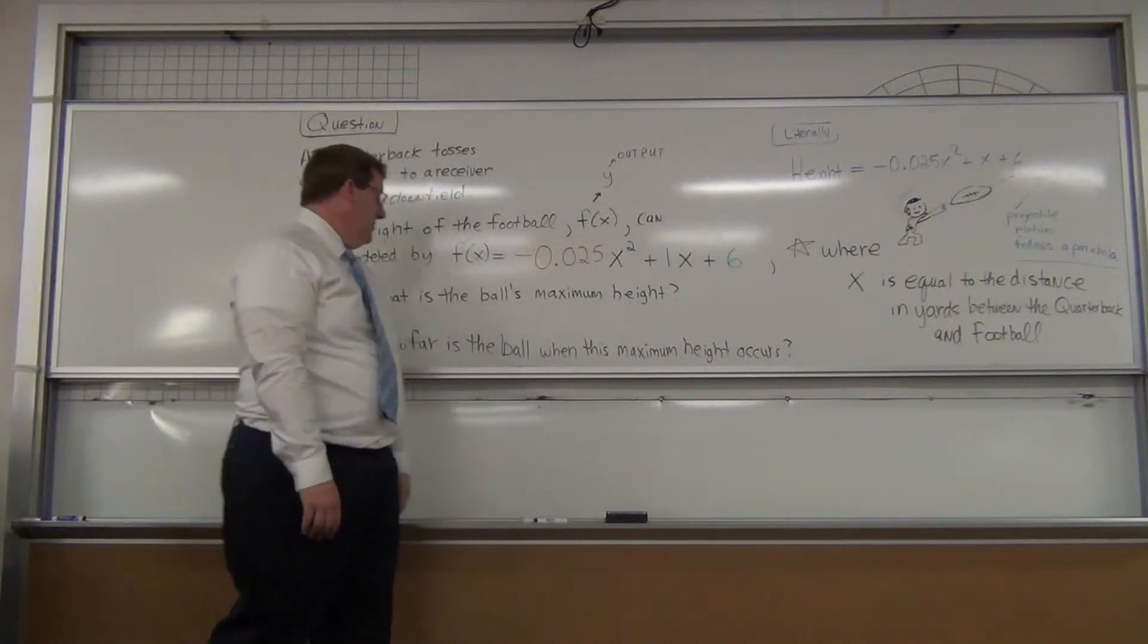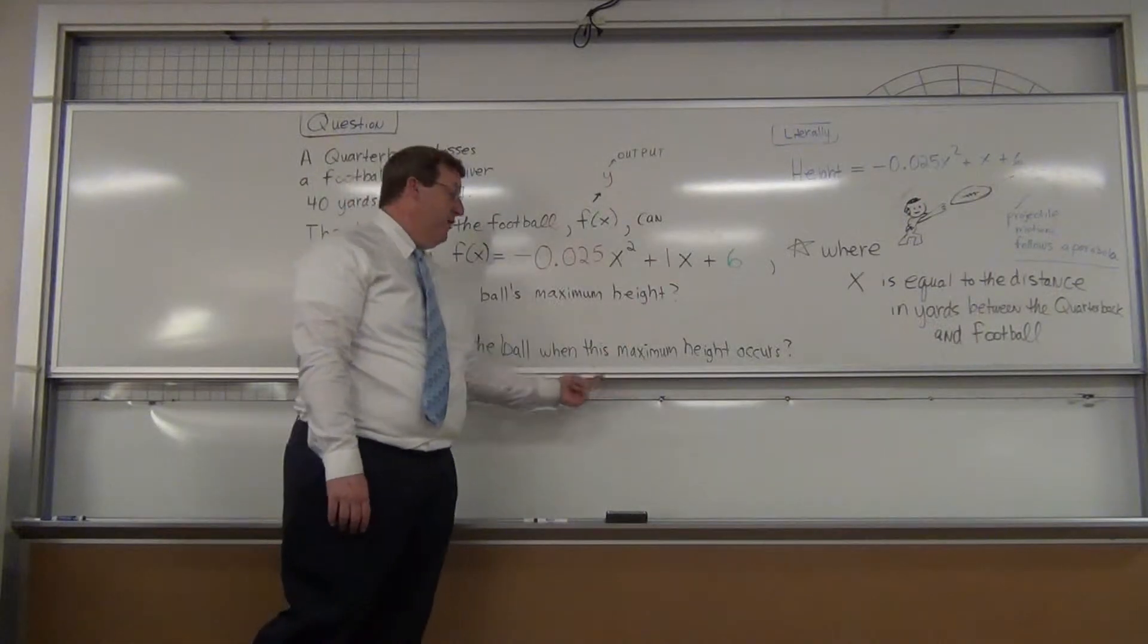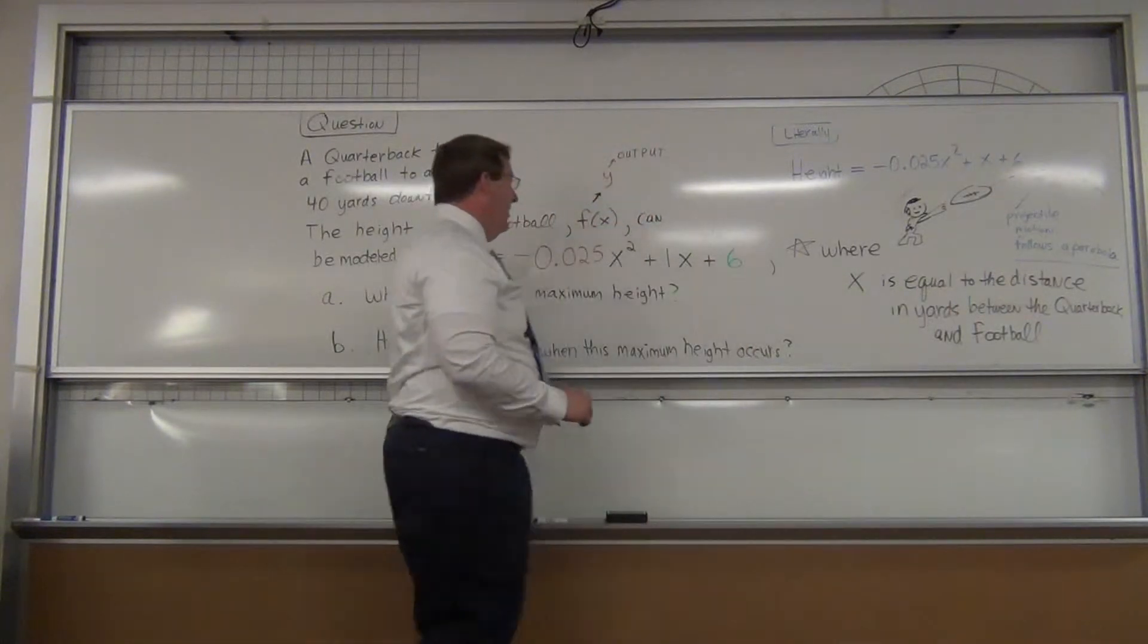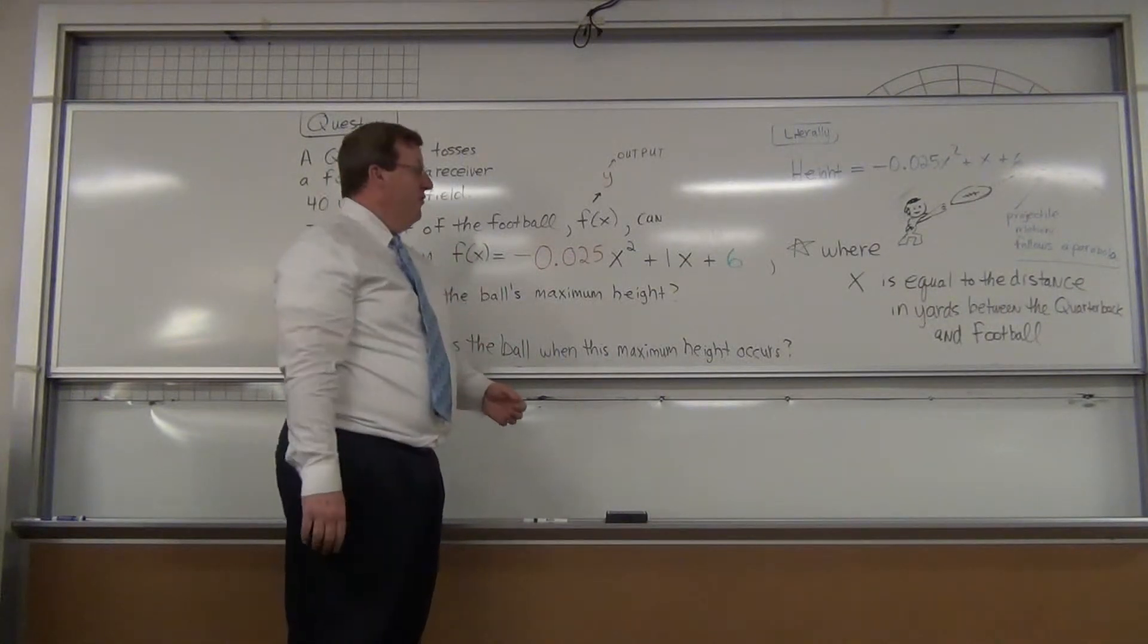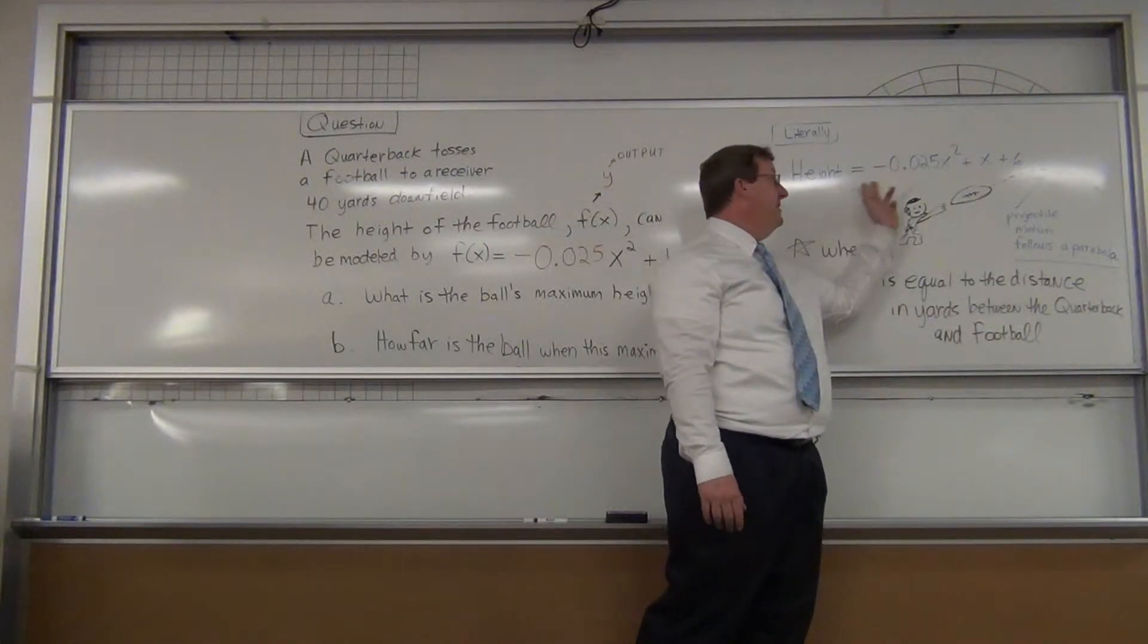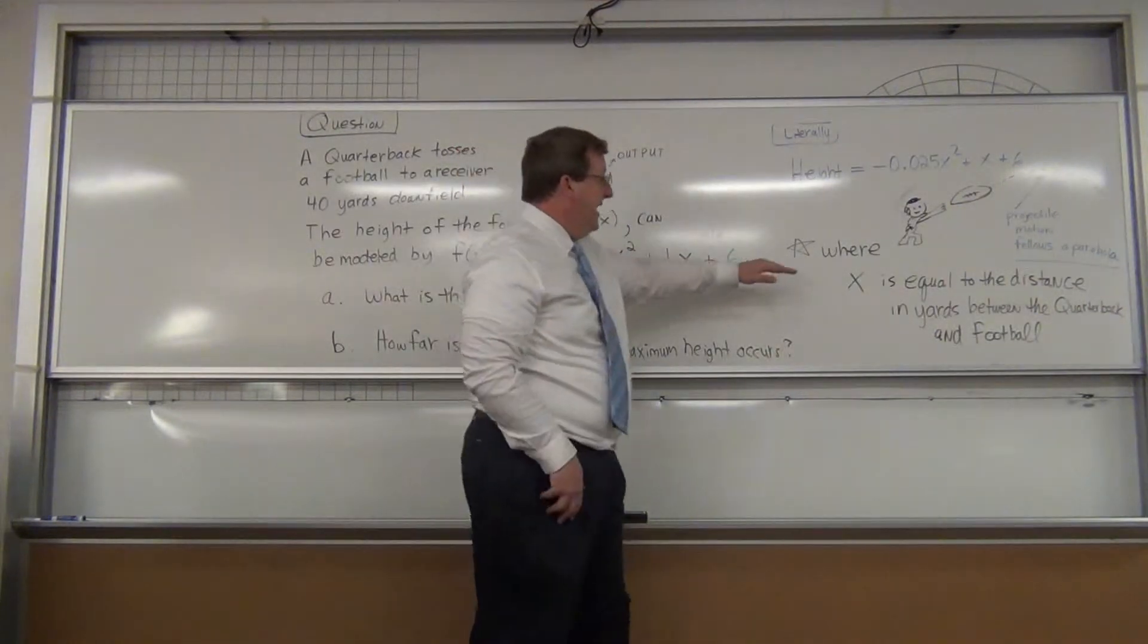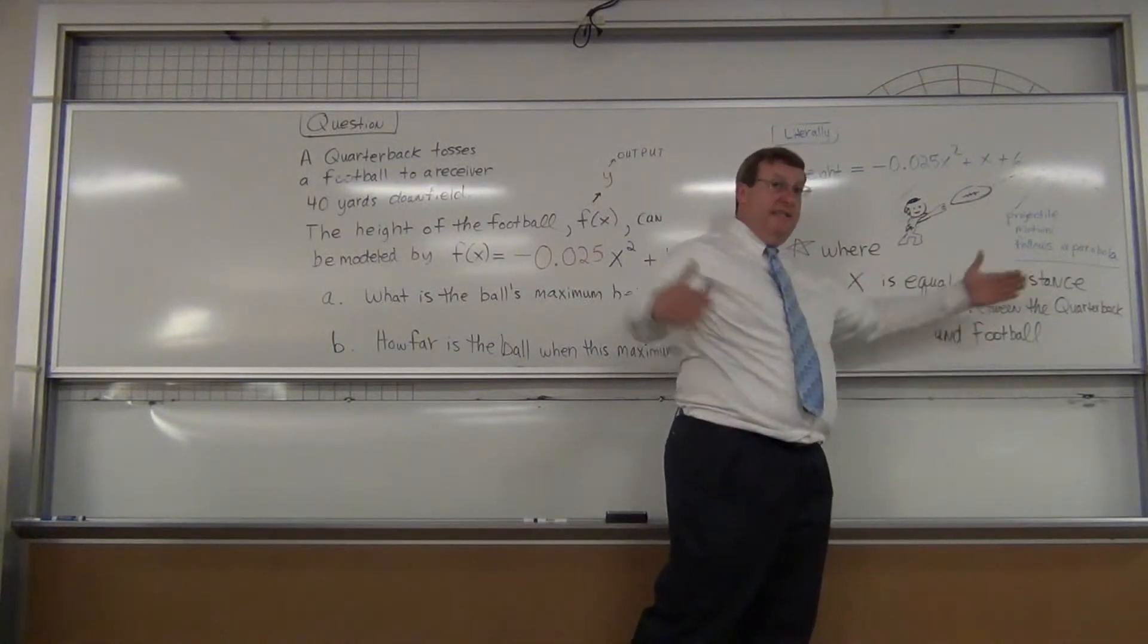The question asks you: what is the ball's maximum height? Then they say, how far was the ball thrown away from the quarterback when it actually reached that maximum height? So one thing that's really important: before we go further, if you want to understand a word problem you have to understand the input and the output. We know the output is the height, literally height is equal to this. But what does the x represent? What does your input represent? Well, they tell you the input is equal to the distance between the football and the quarterback, so the distance away from the quarterback or distance downfield that's been thrown.